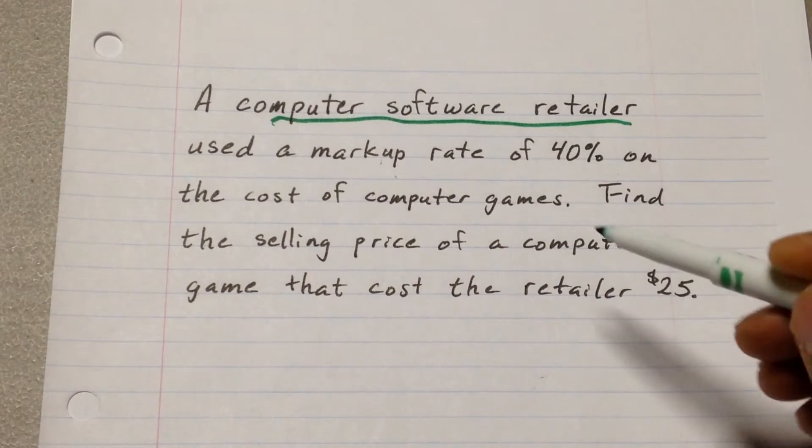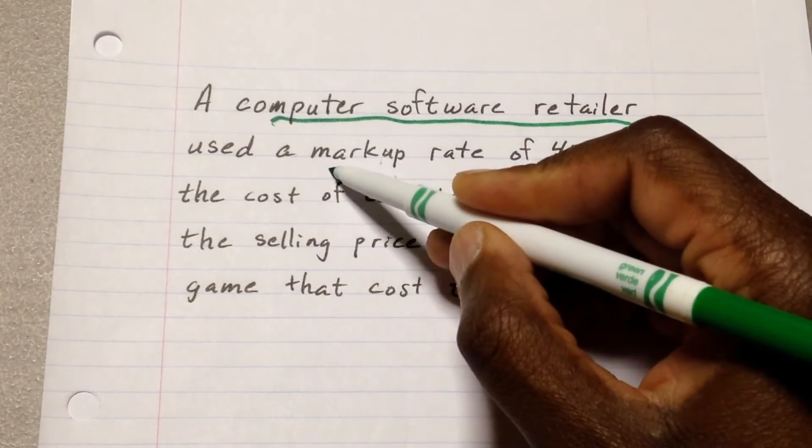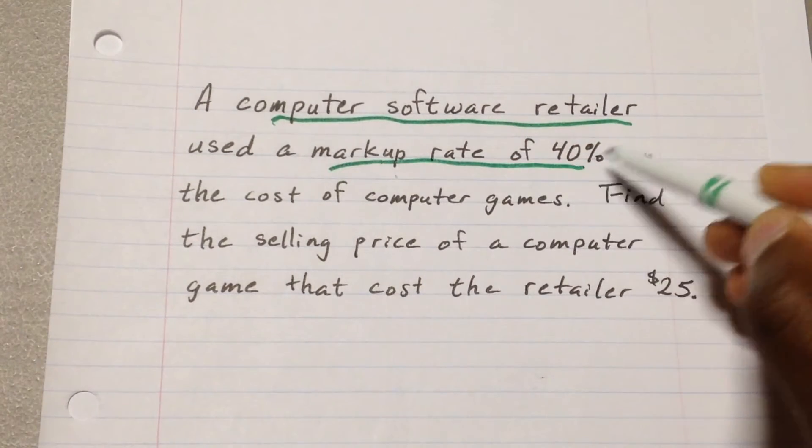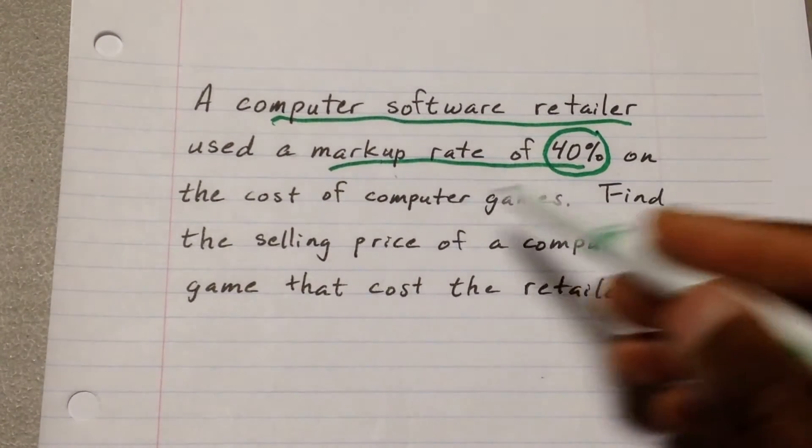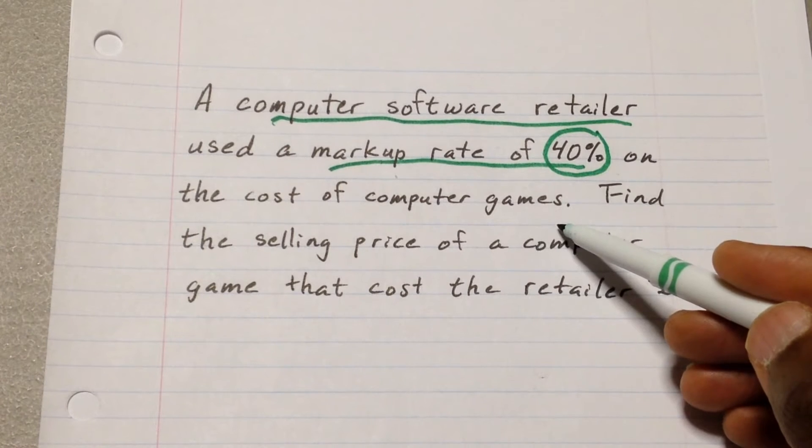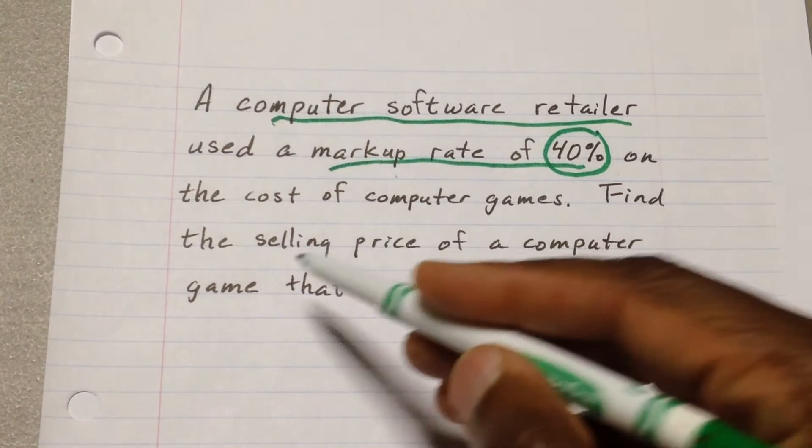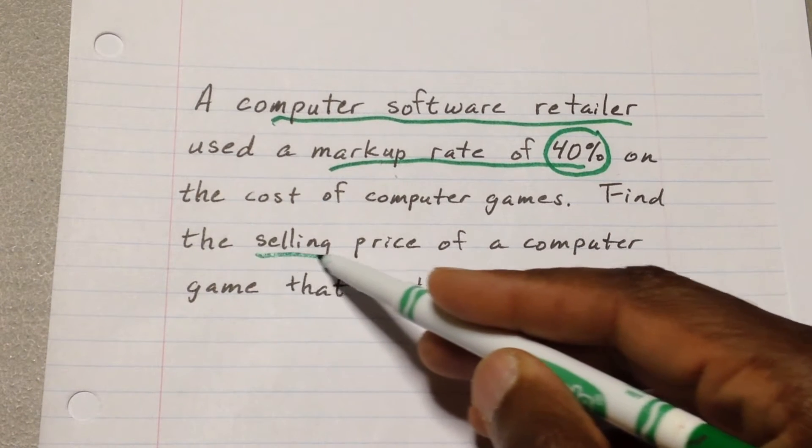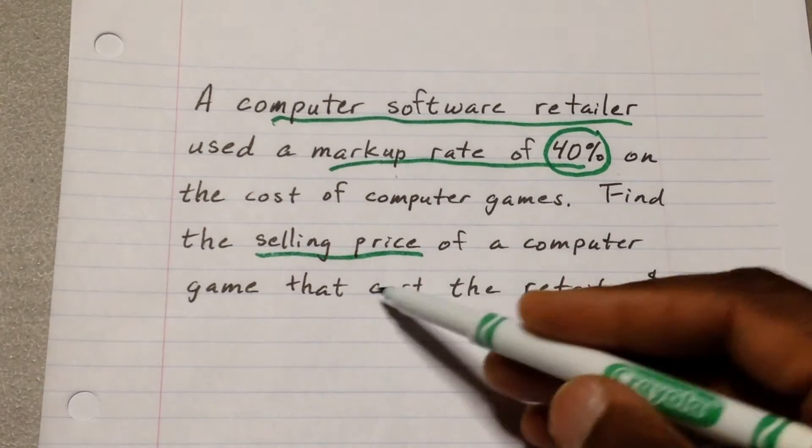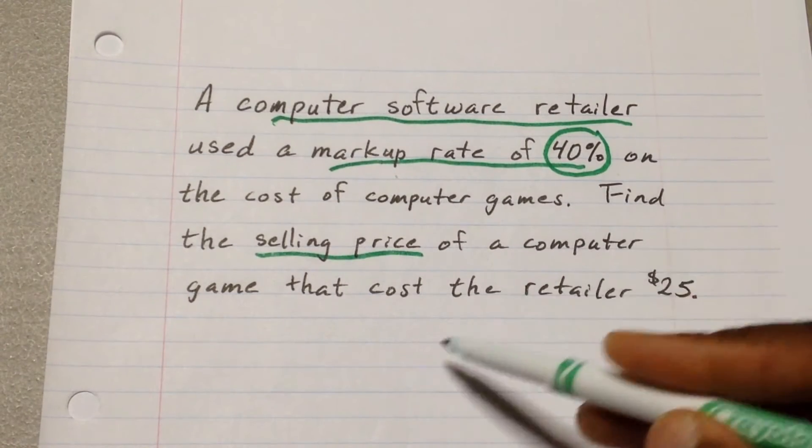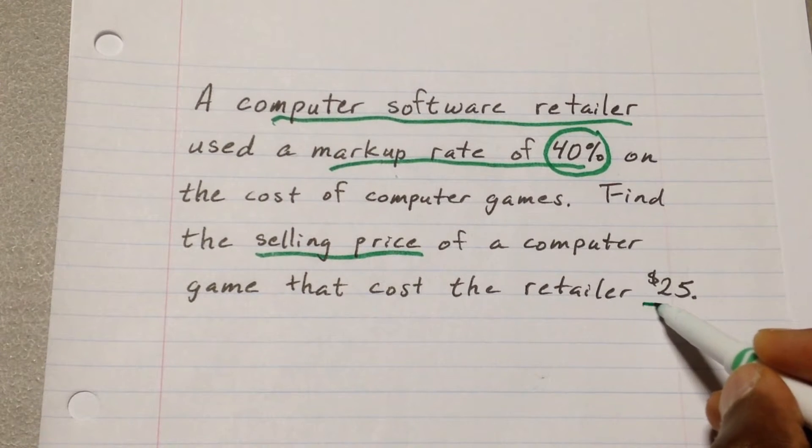This person has a markup. He's using a markup rate of 40%. This is important information to us. A markup rate of 40% on the cost of computer games. Find the selling price. Remember, selling price is the price they're about to sell the games for. So find the selling price of a computer game that costs the retailer $25.